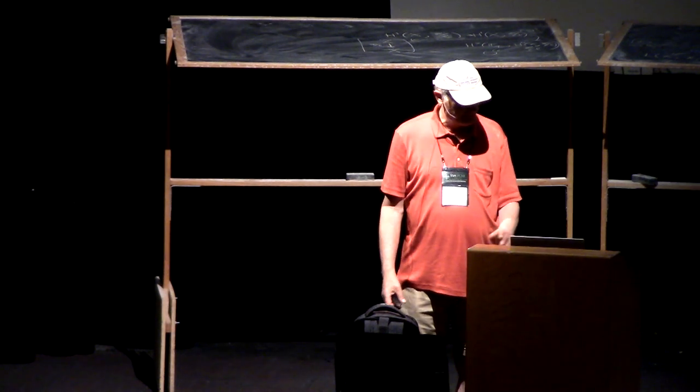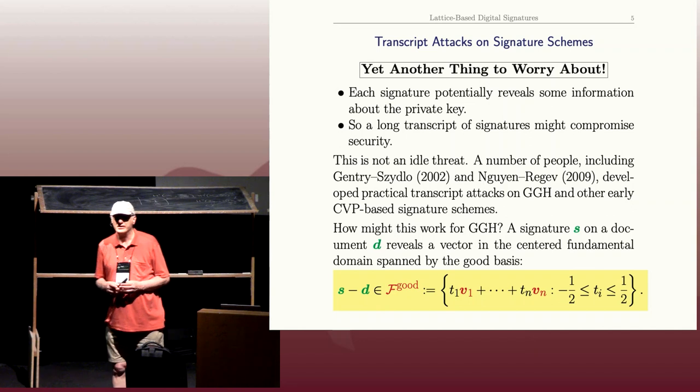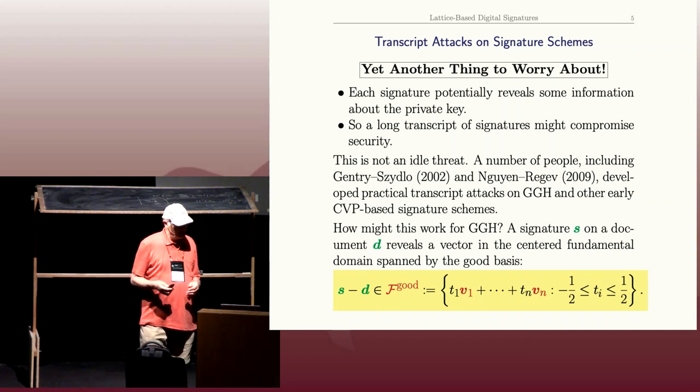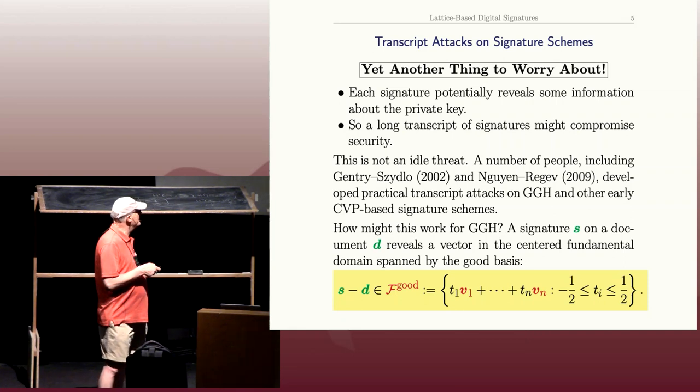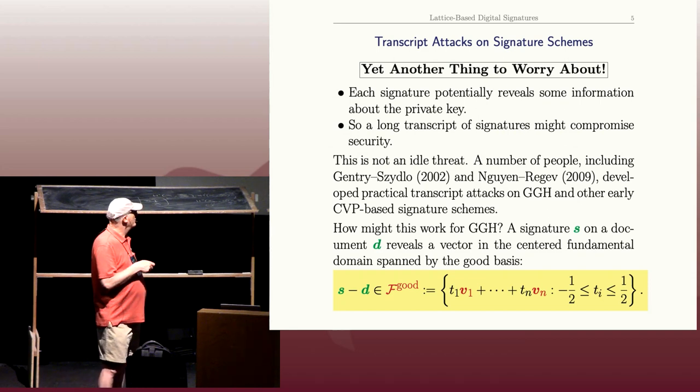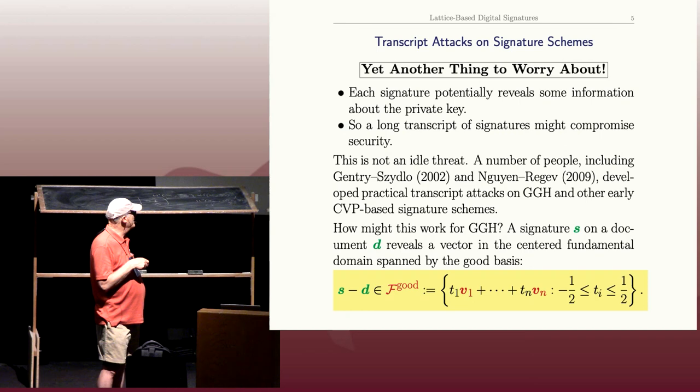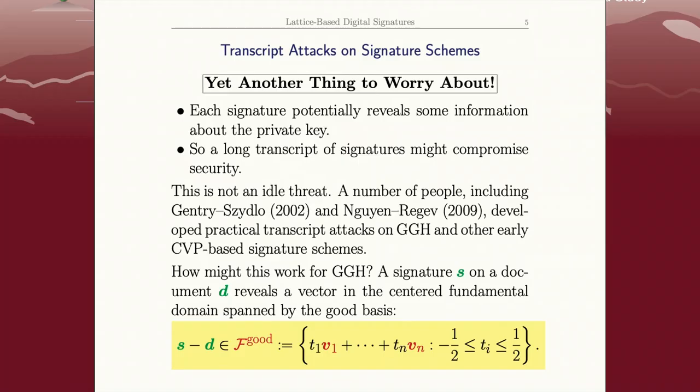Let me show you how this might work for GGH. Why do GGH signatures leak information? Well, what is the signature on GGH? Remember the signature: Alice created the signature S by using her good basis to write D as a linear combination, and then she rounded the coefficients to integers. So if you think about it, what that means is that S minus D is a linear combination of her good basis with coefficients between minus a half and a half. That's how she got this close vector.